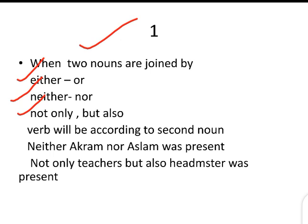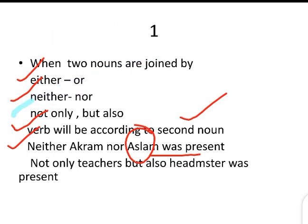For example: 'Neither Akram nor Aslam was present.' The verb is used according to the second noun. The second noun here is Aslam, and Aslam is singular. Because it is singular, the verb used here is also singular — we use 'was'.